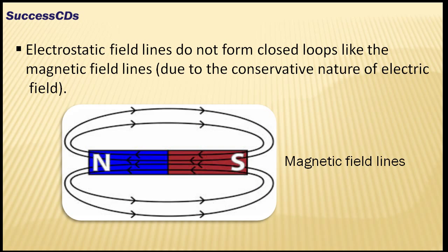Electrostatic field lines do not form closed loops like magnetic field lines due to the conservative nature of electric field.